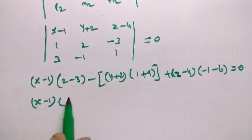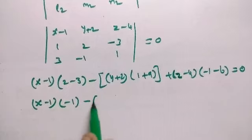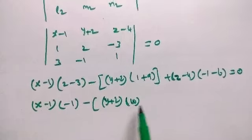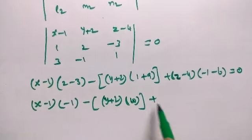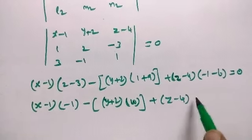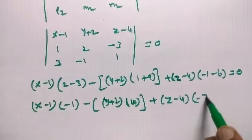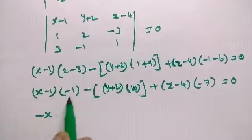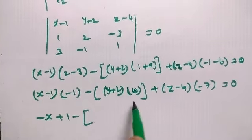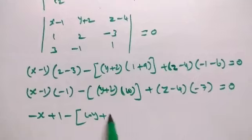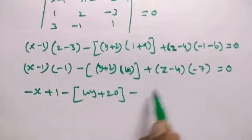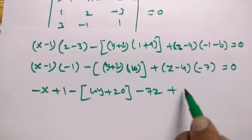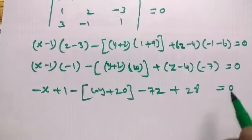x - 1 into 2 - 3 is -1, minus y + 2 into 1 + 9 is 10, plus z - 4 into -1 - 6 is -7 equal to 0. -1 into x - 1, -1 + 1, minus 10 into y, 10y + 2, 10s are 20, plus -7 into z, 7z, minus and minus plus 4, 7s are 28, equal to 0.